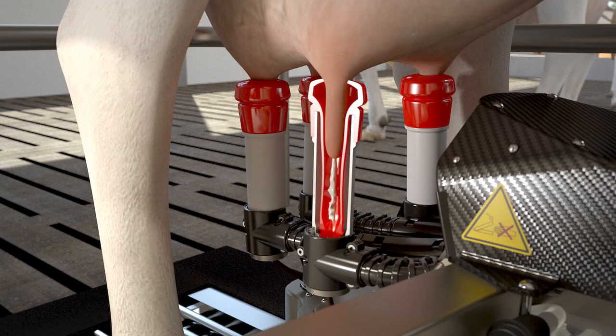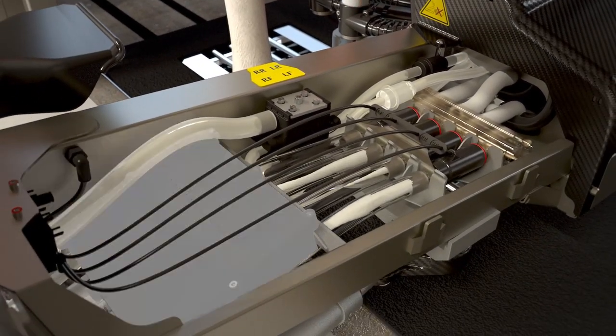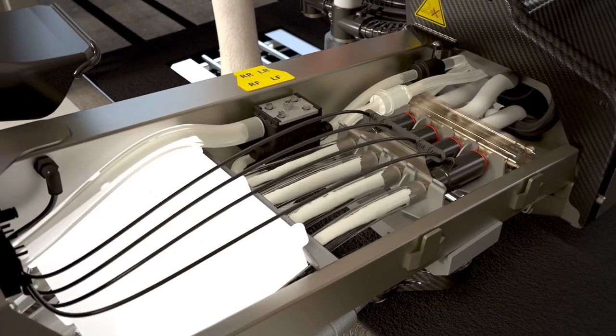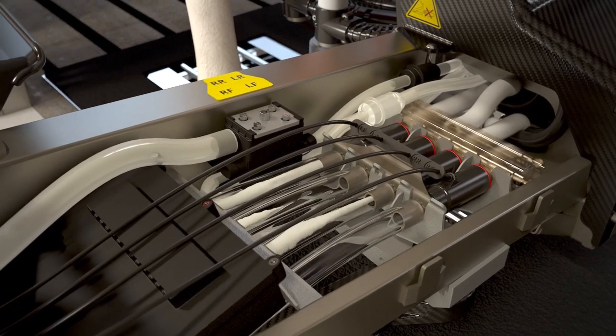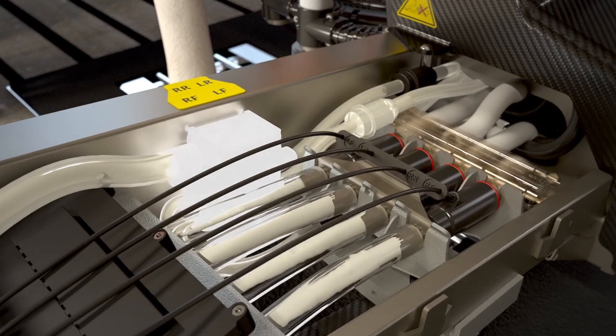The speed with which the udder releases the milk can differ per quarter. This is why the astronaut measures the milk flow separately per quarter from the robot arm right next to the udder. The pulsations are adjusted per quarter based on the milk flow.